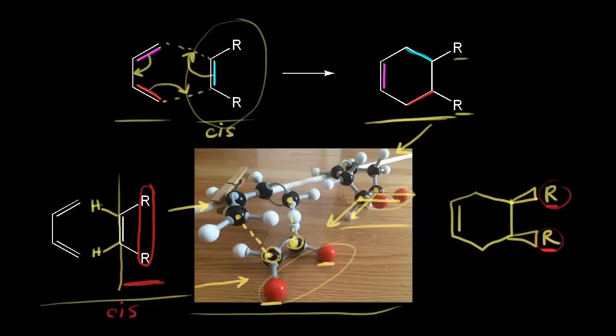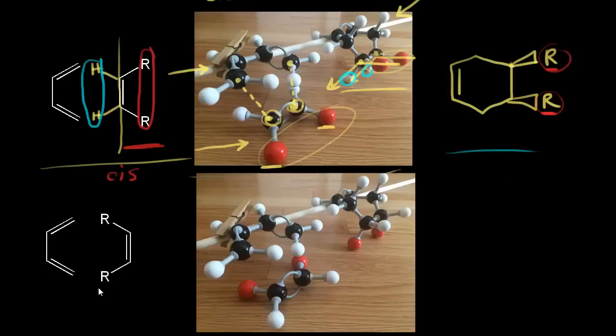For the cis case, the two R groups end up cis on the ring as well — on the same side of the ring. The stuff on the left side of the line, in this case two hydrogens, ends up going down in our product as dashes.